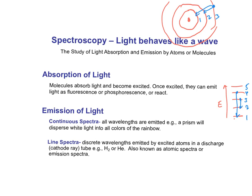Fluorescence is very short-lived — the molecule is excited for a nanosecond or picosecond, then comes down and gives off light. Phosphorescence is much more long-lived — it could be a millisecond or a microsecond.